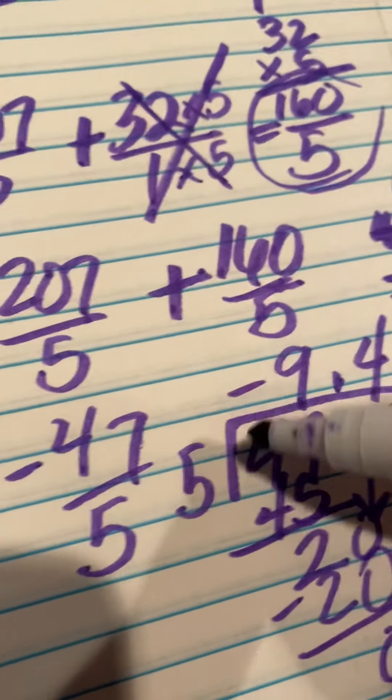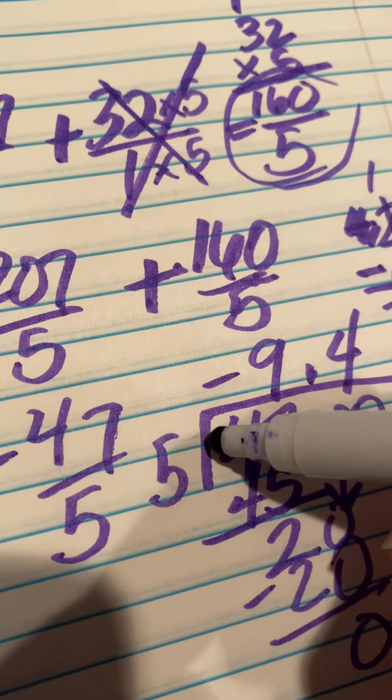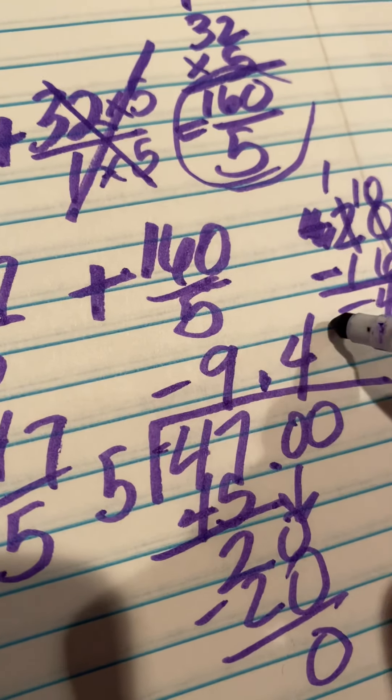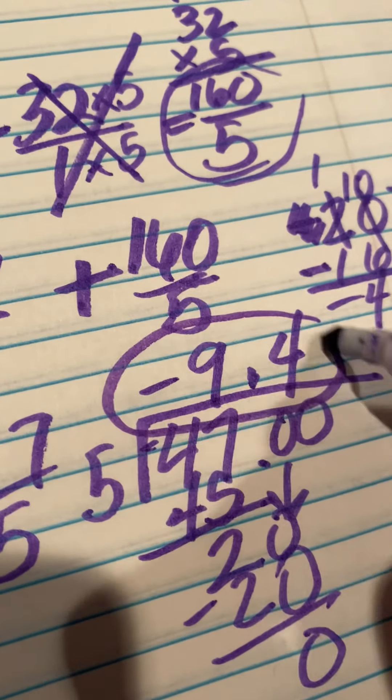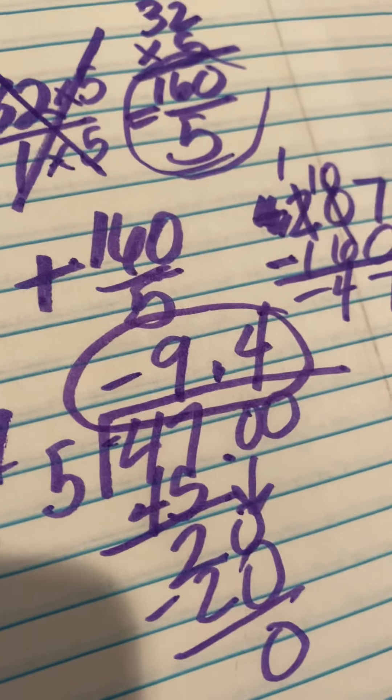And we just remember that since we had negative 47 in here, we have to add it to the end. So our final answer, negative 9.4 degrees Fahrenheit.